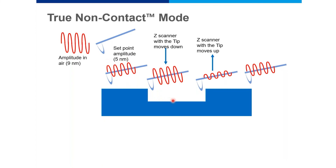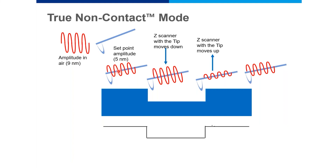Similarly, when the tip scans a hilly area, the distance between the cantilever and the sample becomes very small, the interaction forces increase, and the amplitude decreases significantly. The feedback mechanism then tells the Z-scanner to move slightly up to maintain the five-nanometer set point. Depending on the features of the sample surface, the Z-scanner moves up and down, always adjusting the tip to maintain the set-point amplitude of five nanometers — and this is how you generate the image of the sample surface.